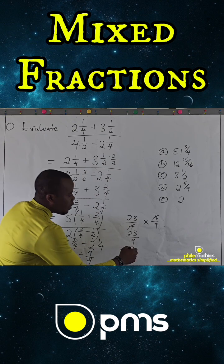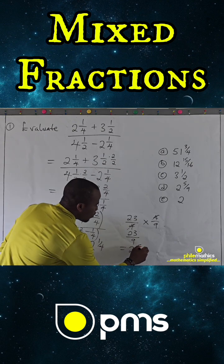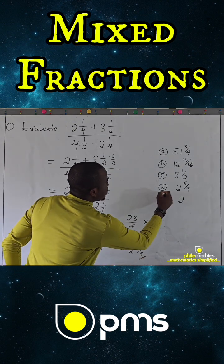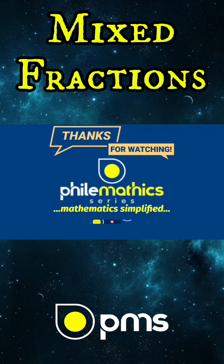Reducing twenty-three over nine gives us two and five over nine. And that's the answer.